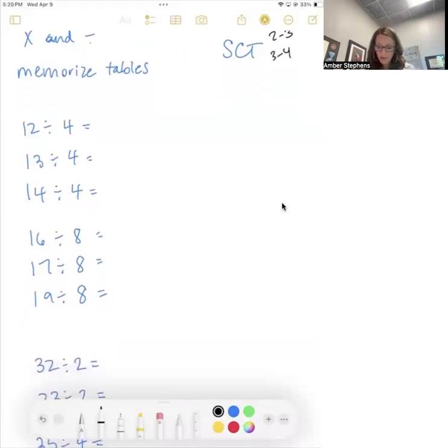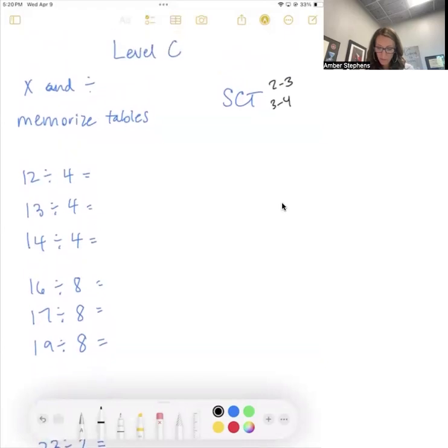I'm going to go ahead and start with this first section, 12 divided by 4. That one is really kind of like one of our simple ones, right? We've memorized what times 4 is 12: 3. So we know 3 times 4 is 12. So then 12 divided by 4 is 3. It's the backwards of multiplication.